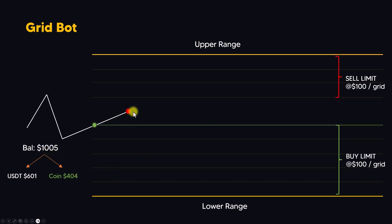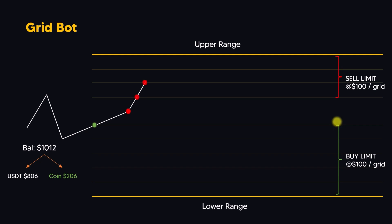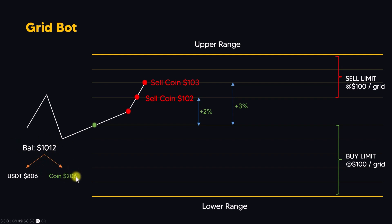After the price increases and takes profit at that level, the bot will open another buy limit order for 100 dollars and so on. Now suppose the price goes up and reaches the second and third grid levels — the grid bot will sell on both levels, profiting two and three percent, and the balance becomes 1012 dollars. The bot sells two times on two grid levels, adding up to the USDT balance.